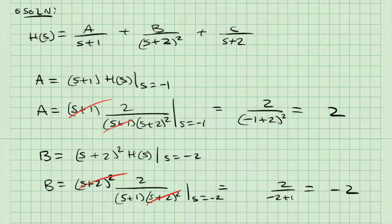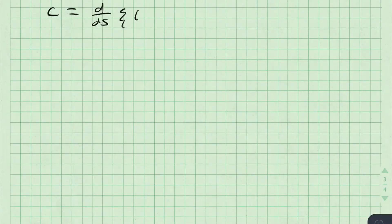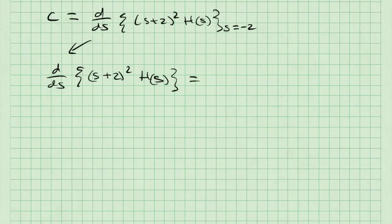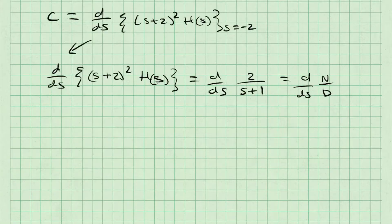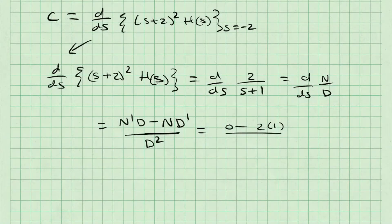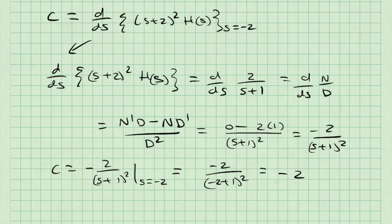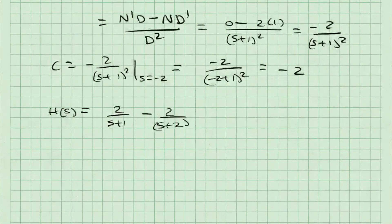Next I need to find C using the derivative approach: take the derivative with respect to S of (S plus 2) squared multiplied by H of S, then evaluate at S equals negative 2. Canceling (S plus 2) squared, I just need the derivative of 2 over S plus 1 using the quotient rule. Defining N equals 2 and D equals S plus 1, the quotient rule gives N'D minus N·D' over D squared, which gives 0 minus 2 over (S plus 1) squared, or negative 2 over (S plus 1) squared. Evaluating at S equals negative 2 gives negative 2 over (negative 2 plus 1) squared, which equals negative 2. So H of S equals 2 over S plus 1, minus 2 over (S plus 2) squared, minus 2 over S plus 2.